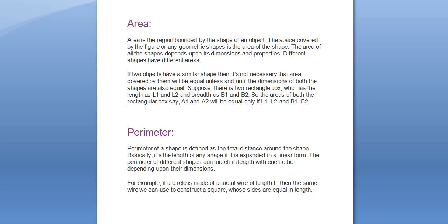Moving on to the perimeter part. Perimeter is basically the distance covered on the outline of the shape. If a circle is made of metal wire of length L, then the same wire can be used to construct a square till the sides are equal in length.